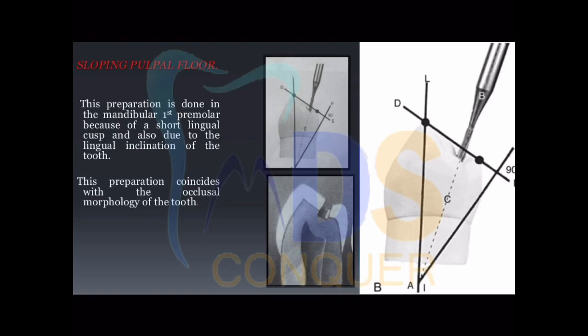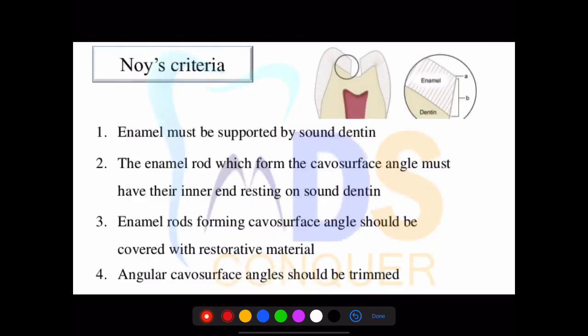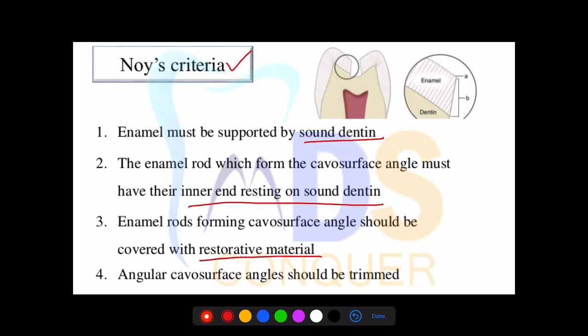The first important thing to note when talking about the mandibular first premolar is that whenever you do a preparation, you should have a slight tilt, basically due to the lingual inclination of this tooth. The four criteria to note: the enamel must be supported by sound dentin; enamel rods forming the cavo-surface angle must have their inner ends resting on sound dentin; enamel rods forming the cavo-surface margin should be covered with restoration; and the cavo-surface angle should be trimmed.